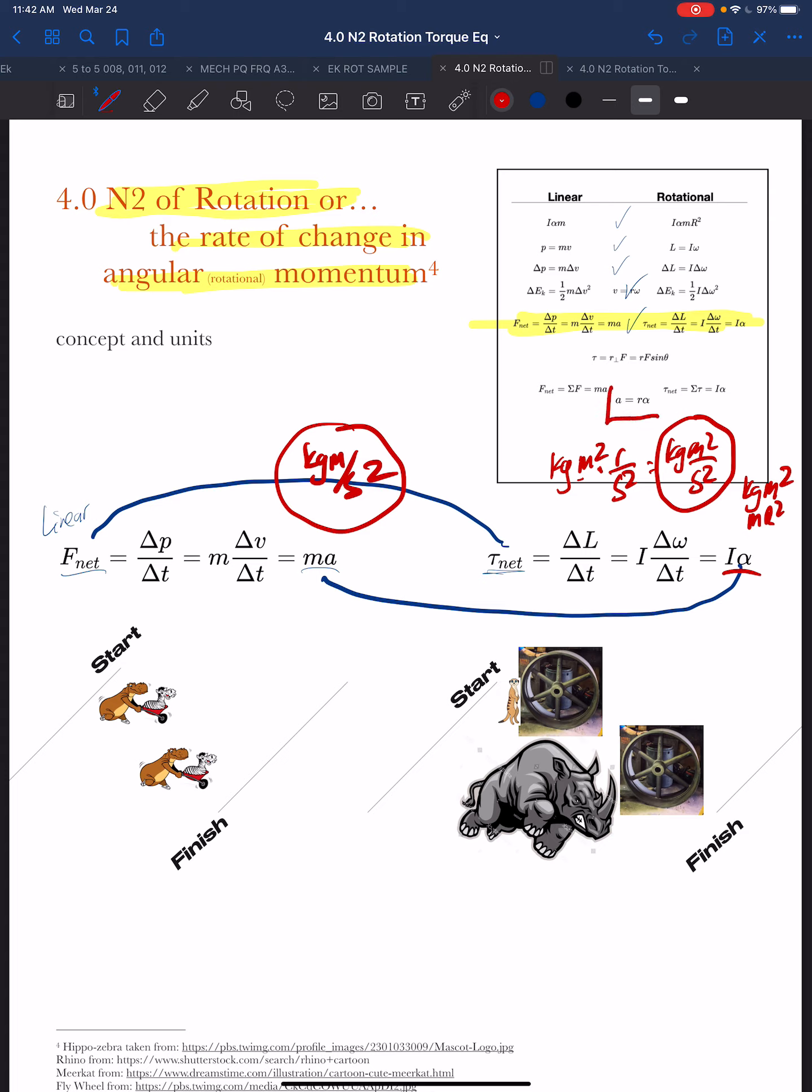However, we do have this relationship that A equals R alpha. So A has a radius R, meters, and alpha is in radians per second squared. So without the radians we do end up with meters per second squared. So the way we can convert A to alpha is by multiplying it by R. So if we were to multiply this A and substitute it with R alpha, we end up with the same units as the net torque.